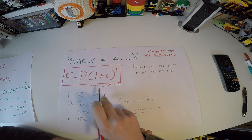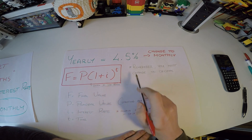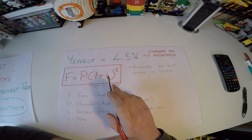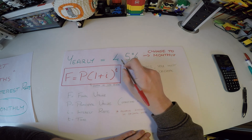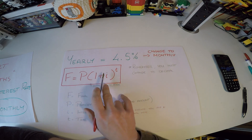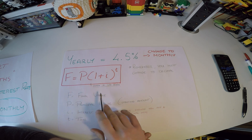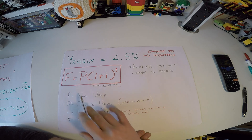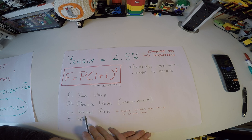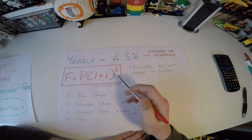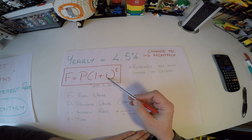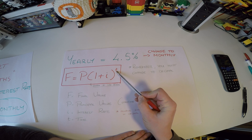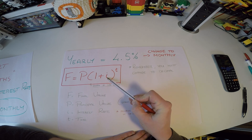We'll always be using our financial maths formula, which is given in your logbook. When we talk about interest rates, we're always talking about decimal versions — never the percentage symbol. So F means the final value, P means the principal or starting amount, i stands for the interest rate (always in decimal), and t stands for time. Always make sure your time matches your interest rate — if you have a yearly interest rate, your time should be in years; if monthly, time should be in months.